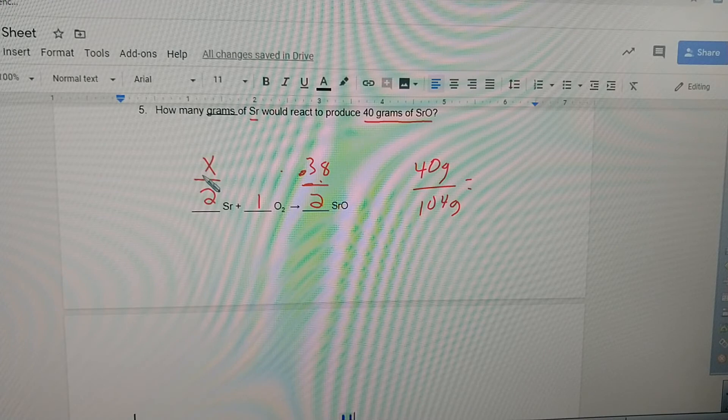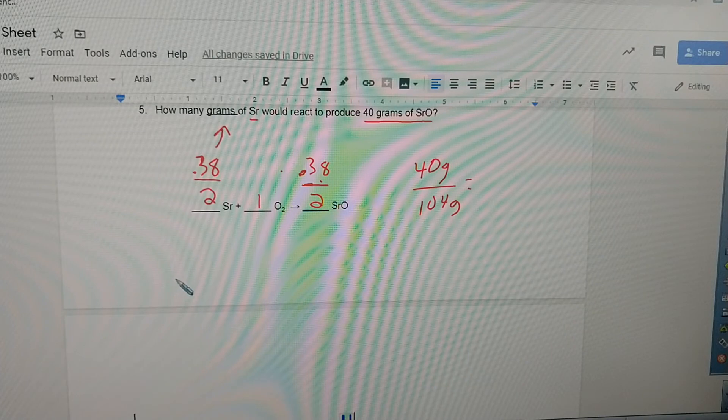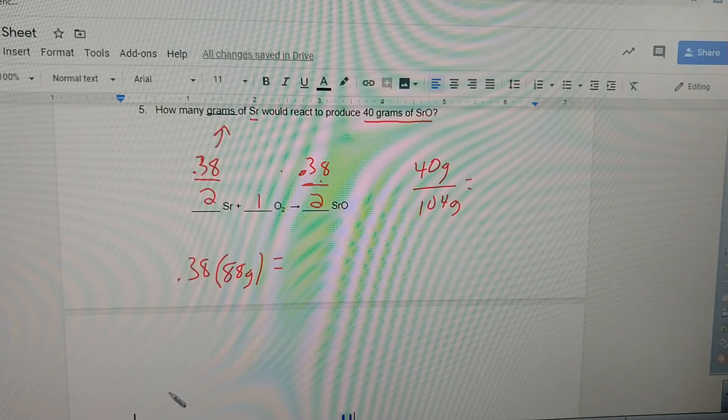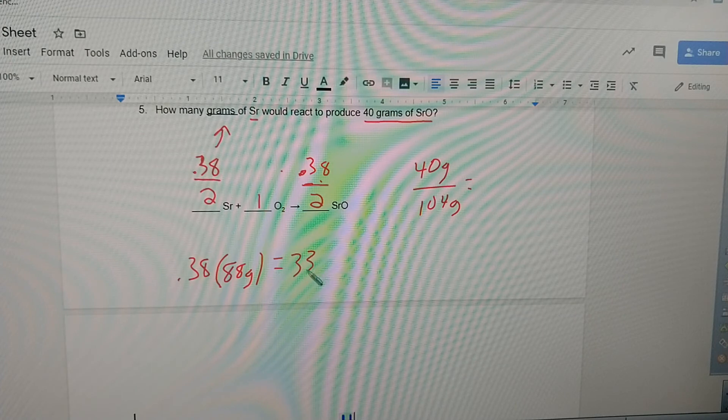And then it says how many grams would that be? We have 0.38 moles of strontium. The molar mass of strontium is 88 grams. We just looked that up. So 0.38 times 88 gives us 33.8 grams. So that's it.